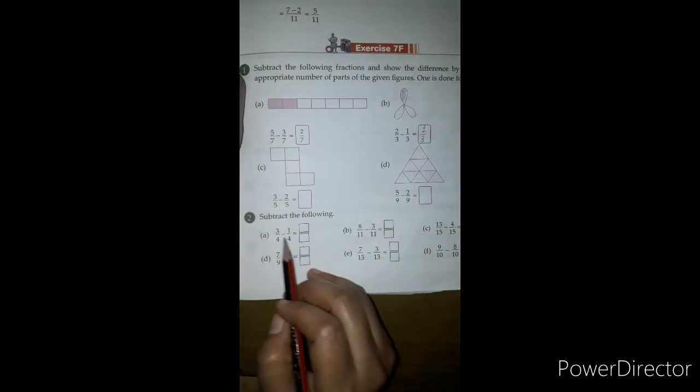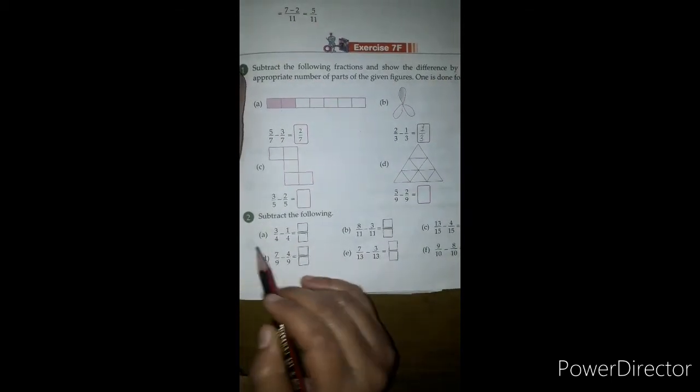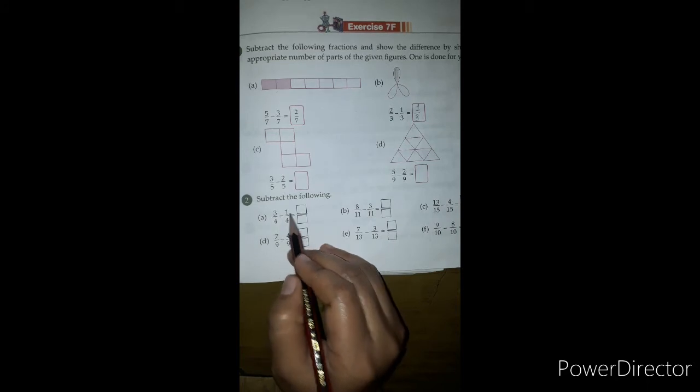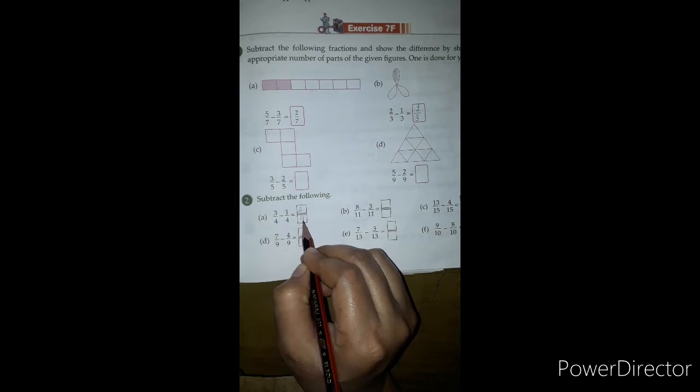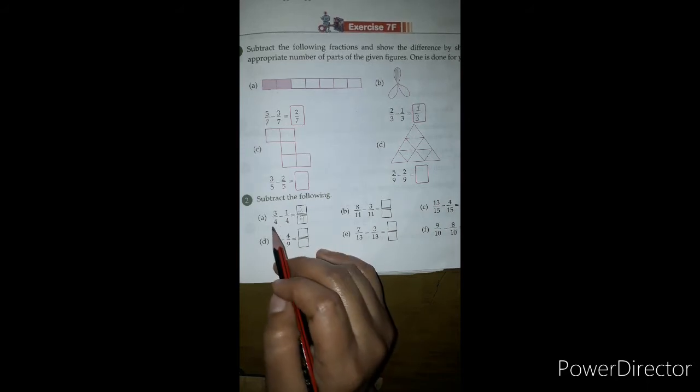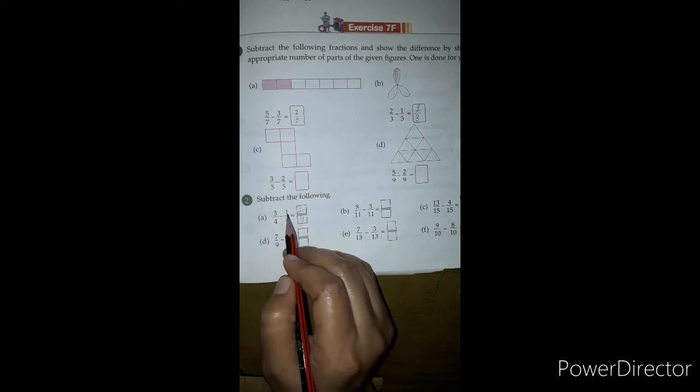Question number 2: Subtract the following. We have to subtract 3 upon 4 minus 1 upon 4. We subtracted 1 from 3, so we get 2, and 4 is common. These are examples of like fractions. In like fractions, denominators are the same, so we compare numerators. We subtracted 1 from 3 to get 2, and we took the denominator as common.